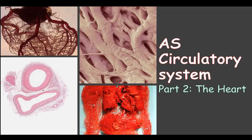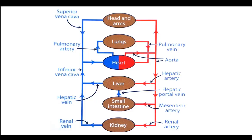Hello again. The next part of the circulatory system is the heart. In the first part of the topic we looked at the major blood vessels going into and out of the heart. In this part we're going to focus on the structure of the heart and how its structure relates to its function, and also the main chambers and the main blood vessels into and out of the heart.